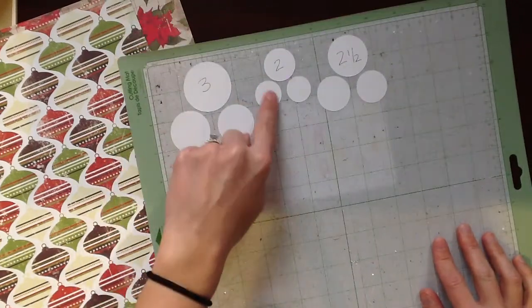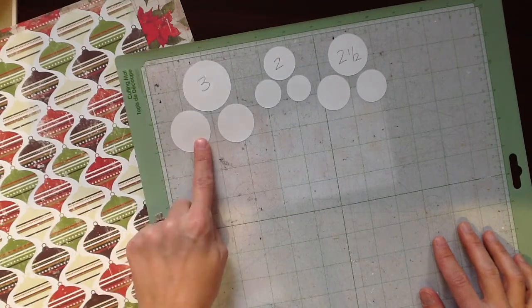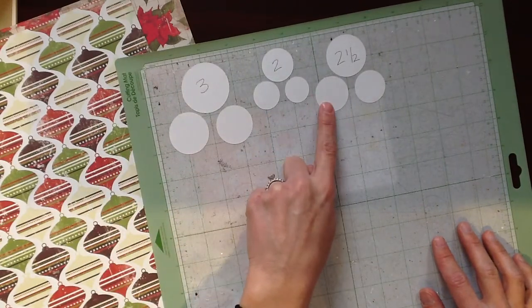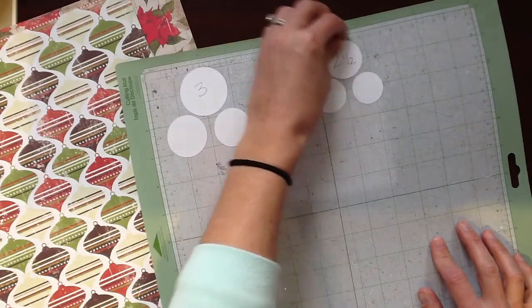And so I cut the three circles using three different sizes. This was three inches, this was two inches, and this was two and a half inches. And I think this is too big, too small, perfect. So I'm going to use the two and a half inch size.